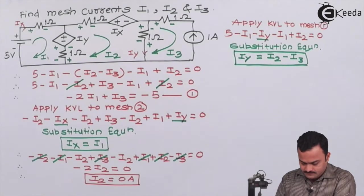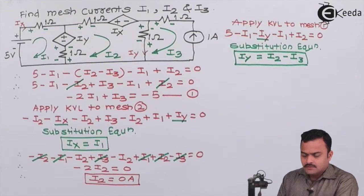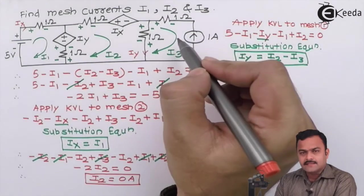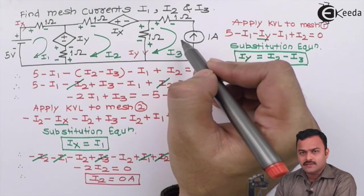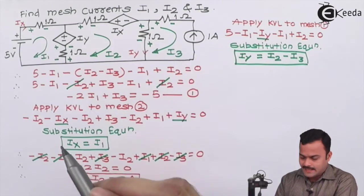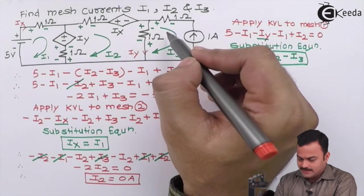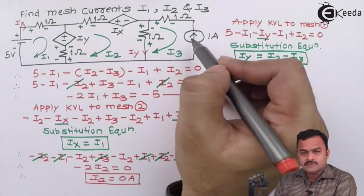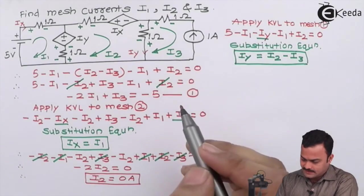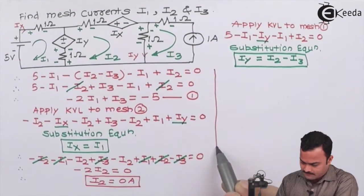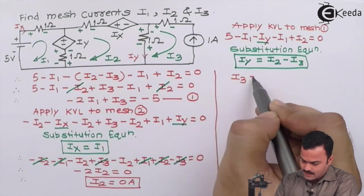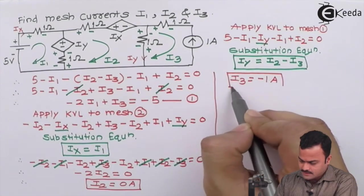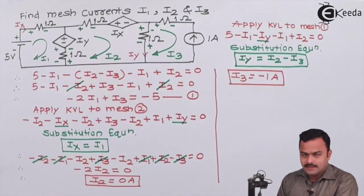Now let's go ahead with mesh 3. Fortunately, in mesh 3 we have a current source which will directly decide the mesh current value. The only thing is that the direction of this 1 ampere source and the direction of mesh current i3 are opposite. Hence, since the current source is part of mesh 3, we can directly say i3 = minus 1 ampere — no need to apply KVL to mesh 3.